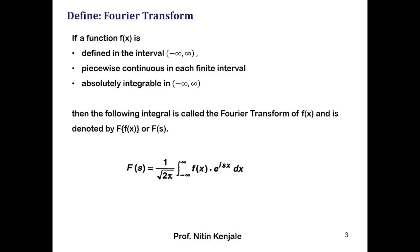That integral is given by 1 by root 2π into the integration of f of x into e raised to isx dx over the limit minus infinity to infinity. This is called the Fourier transform of f of x. Now let us see an example on this.